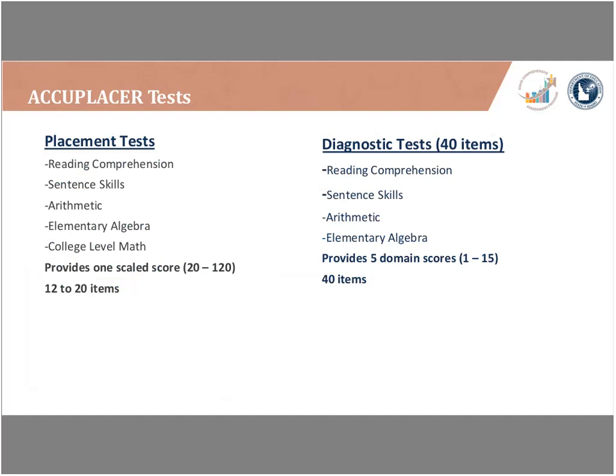The placement exams are computer adaptive and range from 12 items (elementary algebra) up to 20. Each student gets a fixed-length test with the same number of questions, but different questions based on their ability. The diagnostics are longer, so allow more time when planning operationally. Diagnostics cover reading comprehension, sentence skills, arithmetic, and elementary algebra on a score range of 1 to 15, with 40 items each divided into five mini-tests, giving five individual scores rather than one overall score.